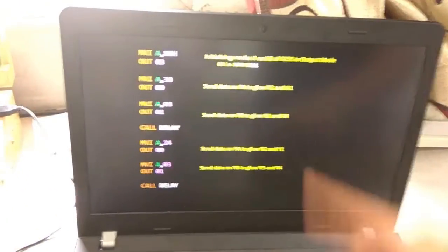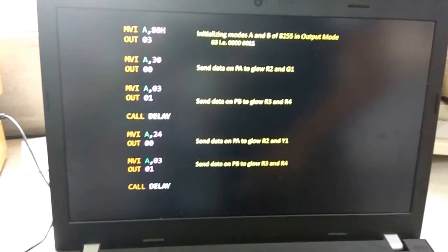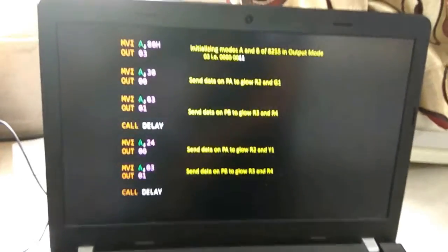This is the code for the type 1 crossing. I have already stored it in the 2000 memory location of 8085 and I will be executing it.